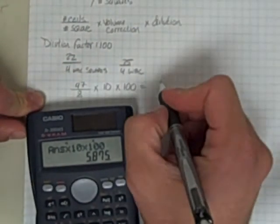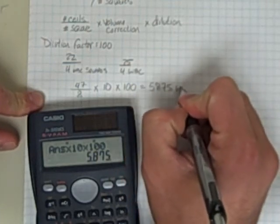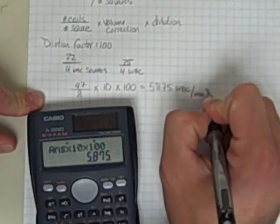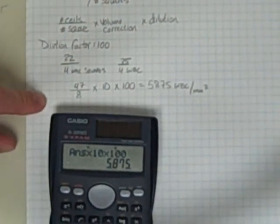We get a count of 5875 white blood cells, and we typically refer to these as per millimeter cubed. Not so bad.